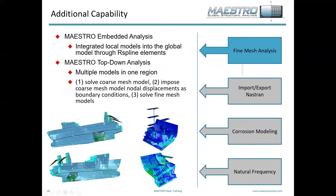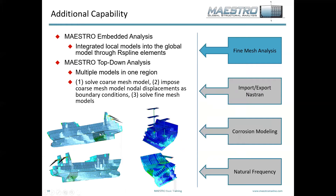With regard to fine mesh analysis, Meister has the ability to do both coarse mesh and fine mesh. There are two options for fine mesh analysis: embedded analysis and top-down analysis. With the embedded analysis, you create a fine mesh model that replaces a section of the hull. When you do the analysis, the computations within that area are done on the fine mesh and passed back and forth to the coarse mesh model.